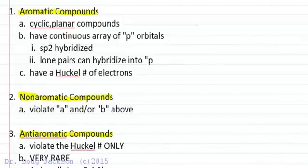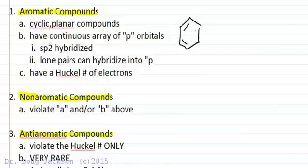What are the criteria for classifying organic compounds as aromatic, non-aromatic, or anti-aromatic? Aromatic compounds are cyclic molecules that contain a continuous array of p orbitals — so everything is sp2 or sp hybridized — and have a Hückel number of electrons. Hückel number means 4n+2. For benzene, the classic example, n is 1 and we have 6 pi electrons.